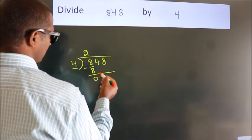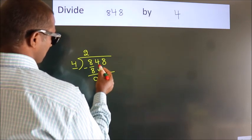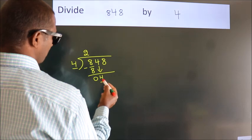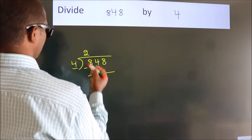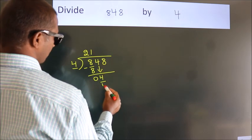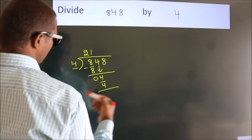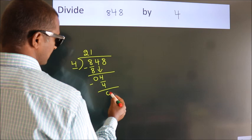After this, bring down the beside number. So, 4 down. So, 4. When do we get 4? In 4 table, 4 1s, 4. Now, we subtract. We get 0.